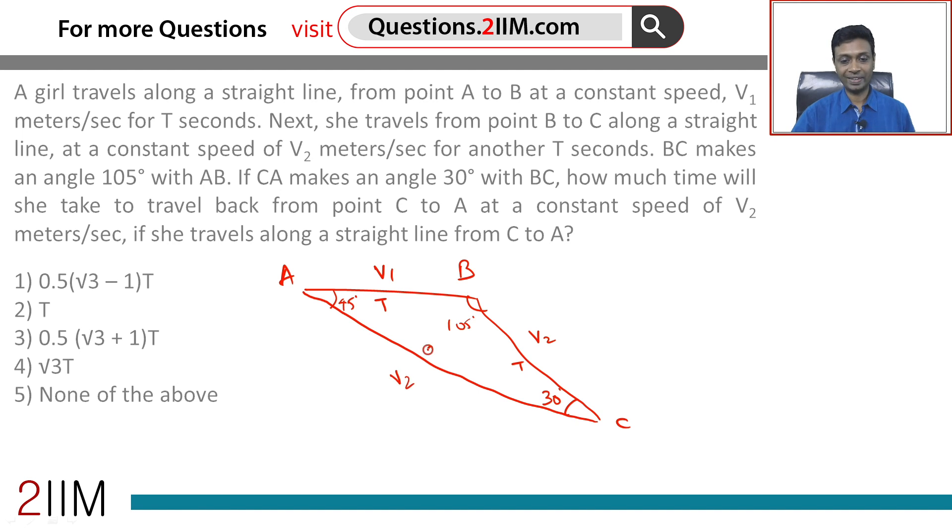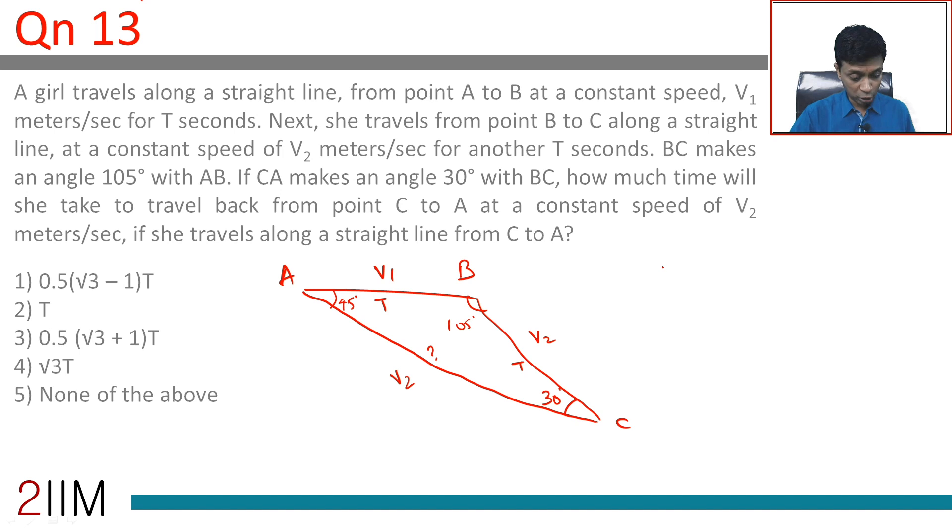She is traveling at V2. We want that time for which she travels. So we have been given the three angles of a triangle. Given three angles, the sides have to be in a specific ratio. Once we crack that ratio, we should be through.